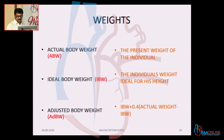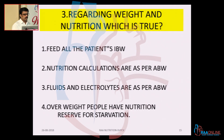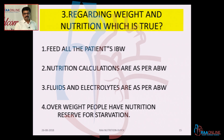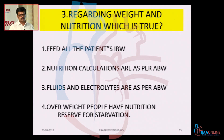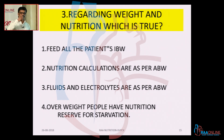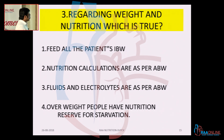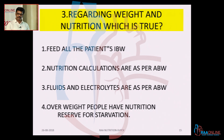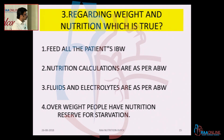These are the definitions — let us see the significance. Regarding weight and nutrition: should we feed all patients based on ideal body weight, similar to how we set tidal volumes? Feeding patients at ideal body weight — if you do not know the actual body weight, feeding for ideal body weight is fairly acceptable, but it is not always correct. Nutrition calculations are not always per actual body weight. In some occasions you use adjusted body weight, and in some occasions ideal body weight. It is not always the case that nutrition is calculated for actual body weight.